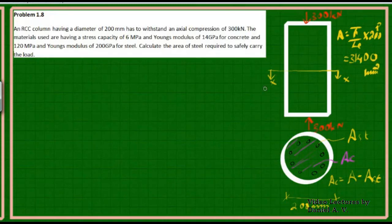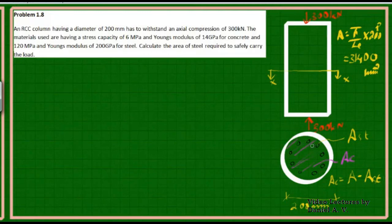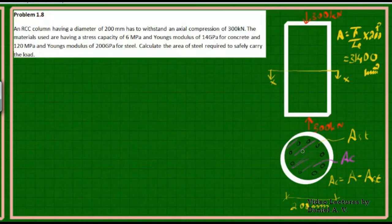When a load is applied to this composite system, it gets transferred to both concrete and steel in a particular ratio — the ratio of their stiffnesses, which depends on length, area of cross-section, and modulus of elasticity. So when 300 kN is applied, it distributes among concrete and steel in some ratio that we need to calculate.